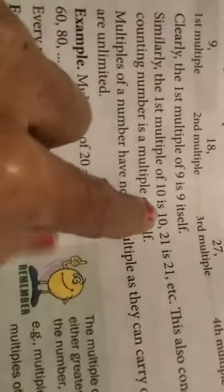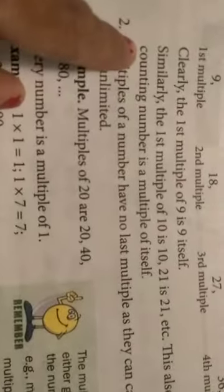Clearly, the 1st multiple of 9 is 9 itself. Similarly, the 1st multiple of 10 is 10, 21 is 21, etc. This also concludes that every counting number is a multiple of itself.